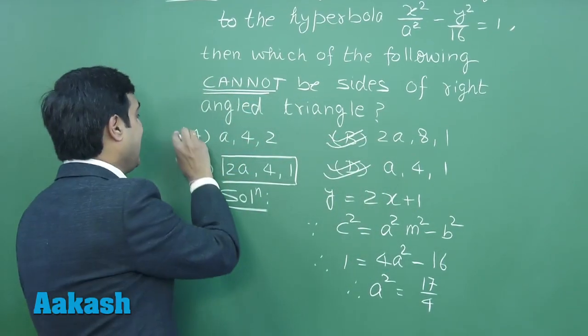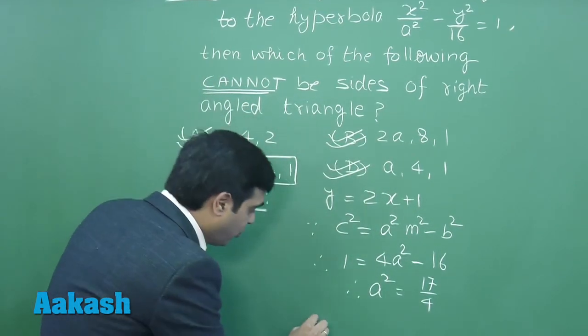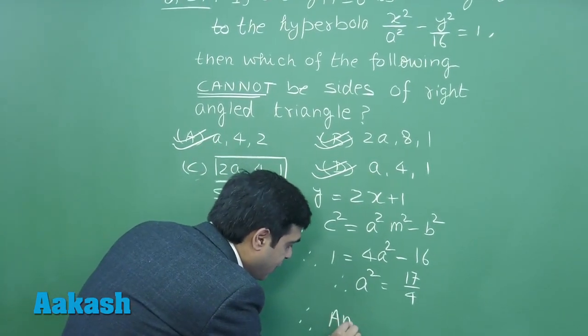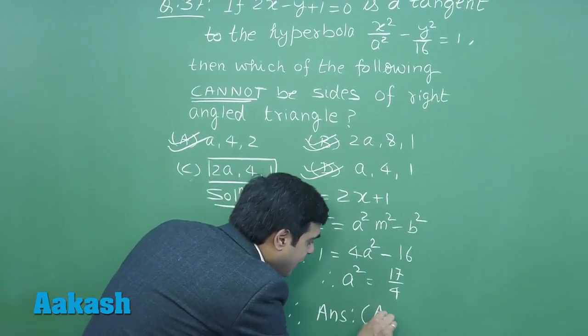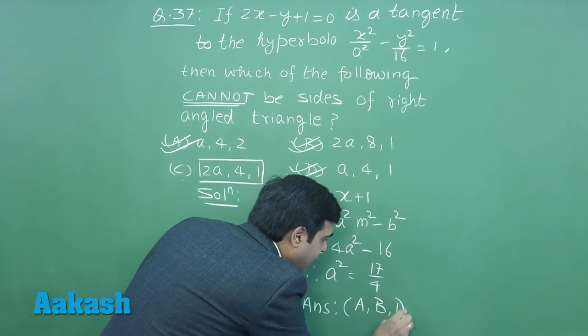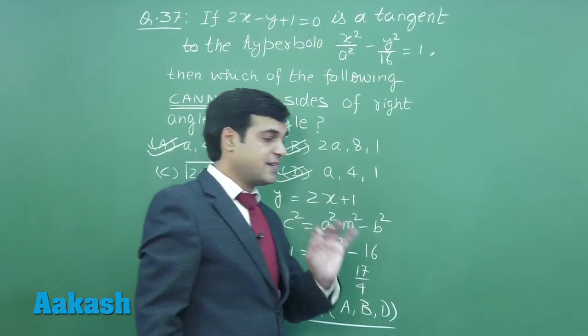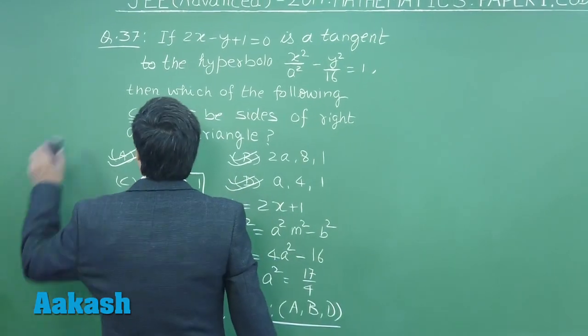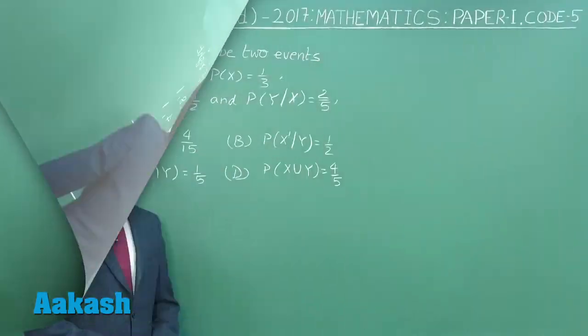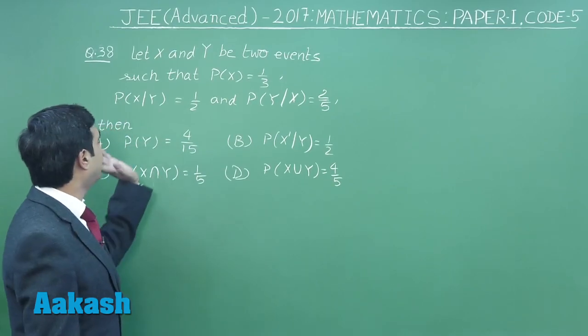And a, 4, 2 is also not forming. So correct options are A, B, and D. This point is clear. Let's move to the next question.